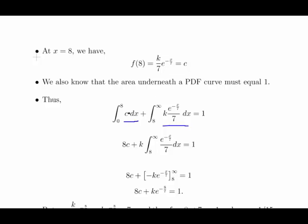For the uniform component we integrate c, which is a constant, so we end up with c times x, and when we evaluate that we get 8c. For the exponential component, we can take out k. We have e to the minus x over 7 divided by 7, which gives us minus k times e to the minus x over 7.